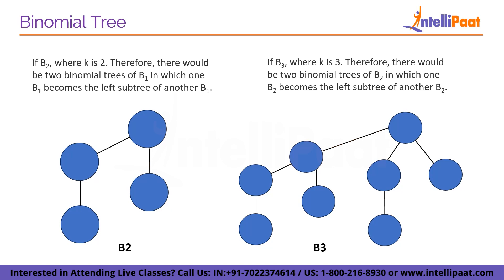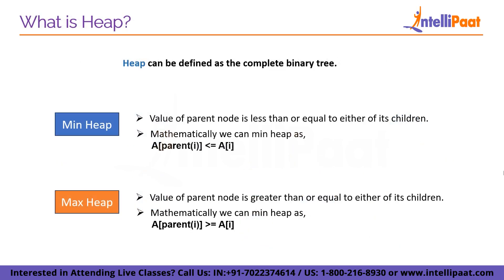Moving forward, we will see what a heap is. We can simply define heap as a complete binary tree. There are two types of heap: min heap and max heap. In the min heap, the value of the parent node is less than or equal to its children, and the smallest element is located at the root. On the other hand, in the max heap, the value of the parent node is greater than or equal to its children, and the largest element is located at the root.